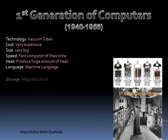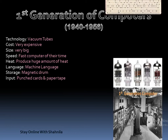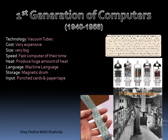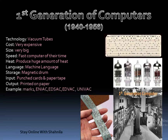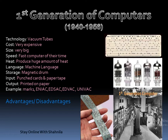For storage of data, magnetic drums were used. For input, punch cards and paper tapes were used, and output was taken on paper. Examples of first generation computers include Mark I, ENIAC (Electronic Numerical Integrator and Calculator), EDVAC (Electronic Discrete Variable Automatic Computer), and UNIVAC (Universal Automatic Computer).